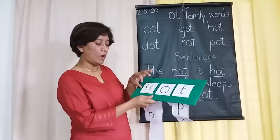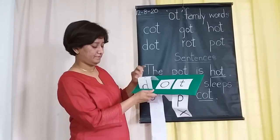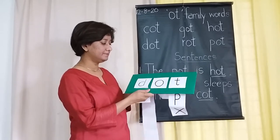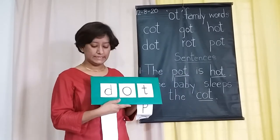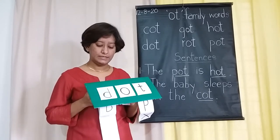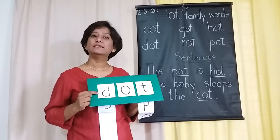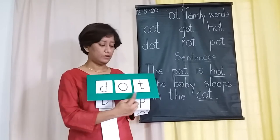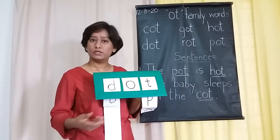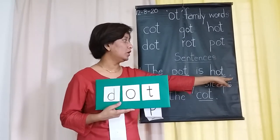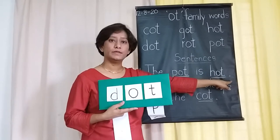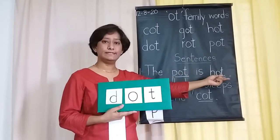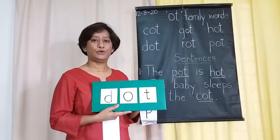Let's make one more word. This time I am going to add D. D says D. D, O, T — Dot. Dot is a small point, and when we put a dot after a sentence it is called a full stop.